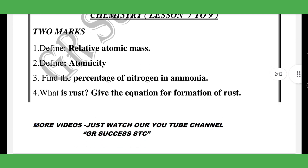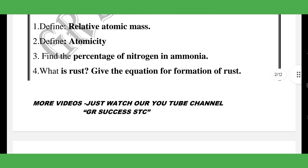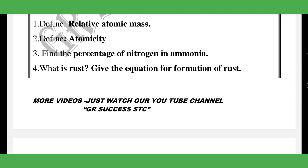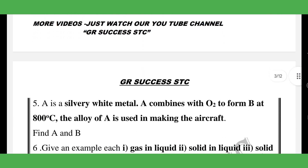Next is chemistry — very simple questions. Topics include relative atomic mass, atomicity, percentage of nitrogen in ammonia. Then: what is rust? Give the equation for the formation of rust. Rust is ferrous oxide Fe₂O₃.